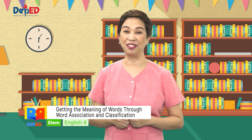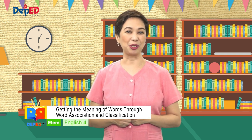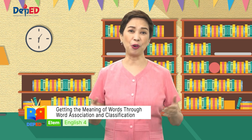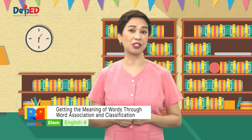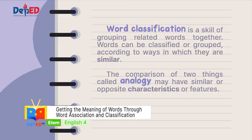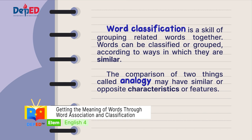Are you still up for another activity? Before we do that, let us first summarize the important points you learned from our lesson. Word classification is a skill of grouping related words together. Words can be classified or grouped according to ways in which they are similar. The comparison of two things, called analogy, may have similar or opposite characteristics or features.